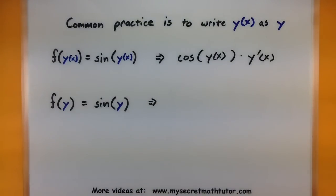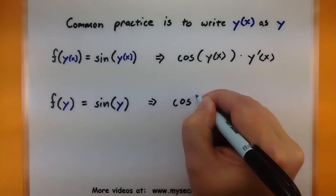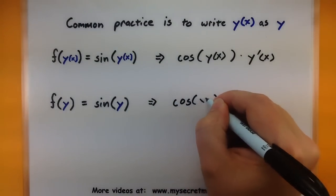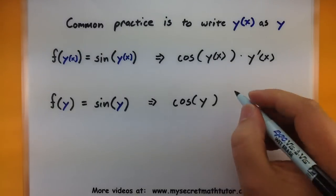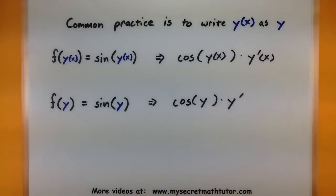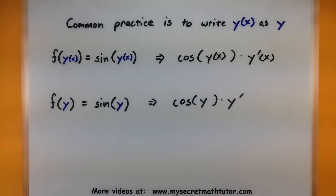Now, since it's common practice to simply write y and assume that it is a function of x, here's how that same problem looks using the more common notation. So I'm trying to take the derivative of f, and I start off taking the derivative of sine — so there's my cosine. The inside is going to stay exactly the same, so we just write y, multiplied by the derivative of the inside, y prime. So that's implicit differentiation. Since I don't know y exactly, it has to stay the same, and its derivative I'm just going to express as y prime.